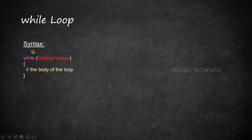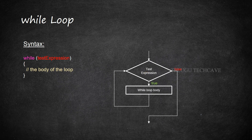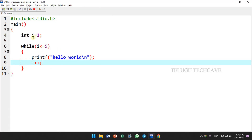Next is the while loop. The while loop has a test expression, an initialization statement, a loop body, and an update expression. First, the test expression condition is checked. If true, the loop body executes. Here we use int i equal to 1, while i less than or equal to 5. When i value is 1: 1 less than or equal to 5, condition true, so we print. Next, the update statement: i plus plus.